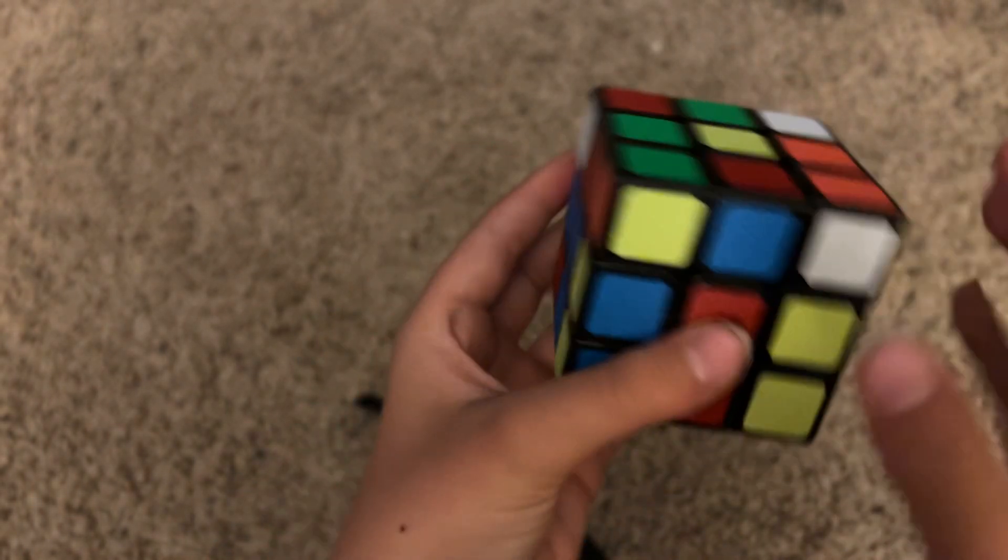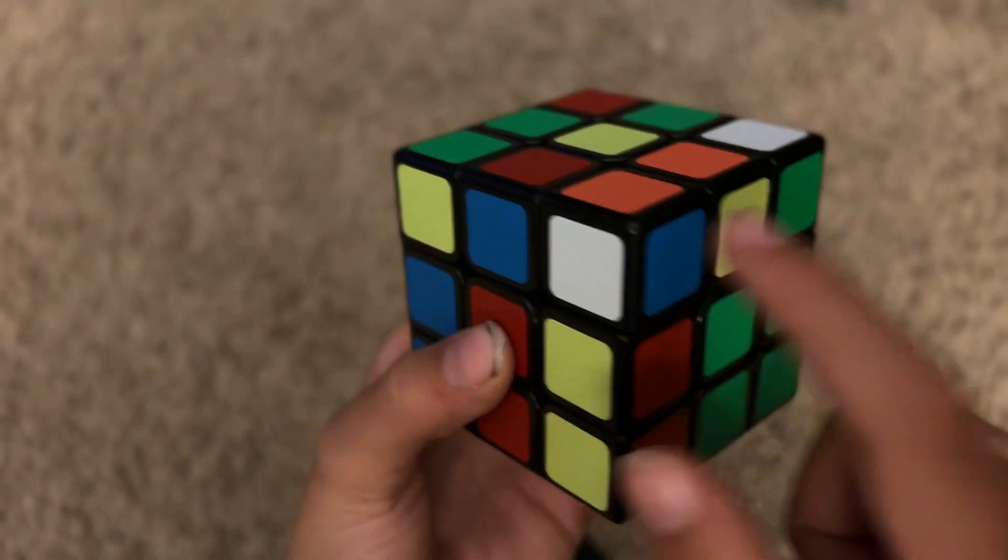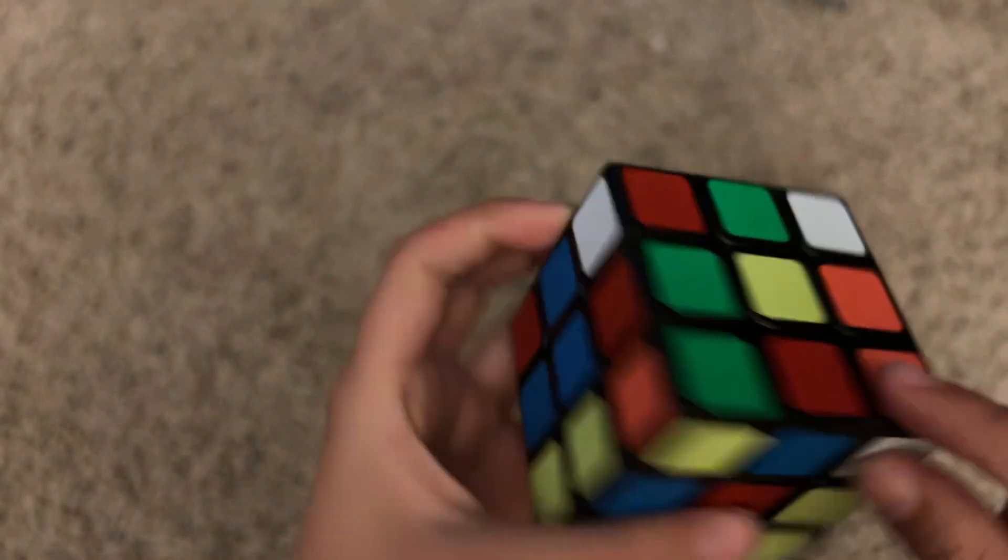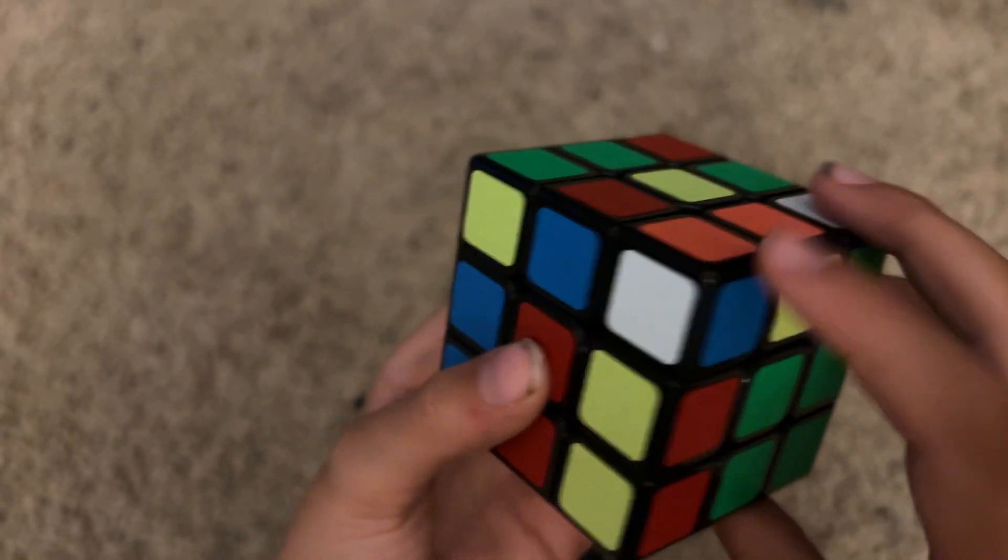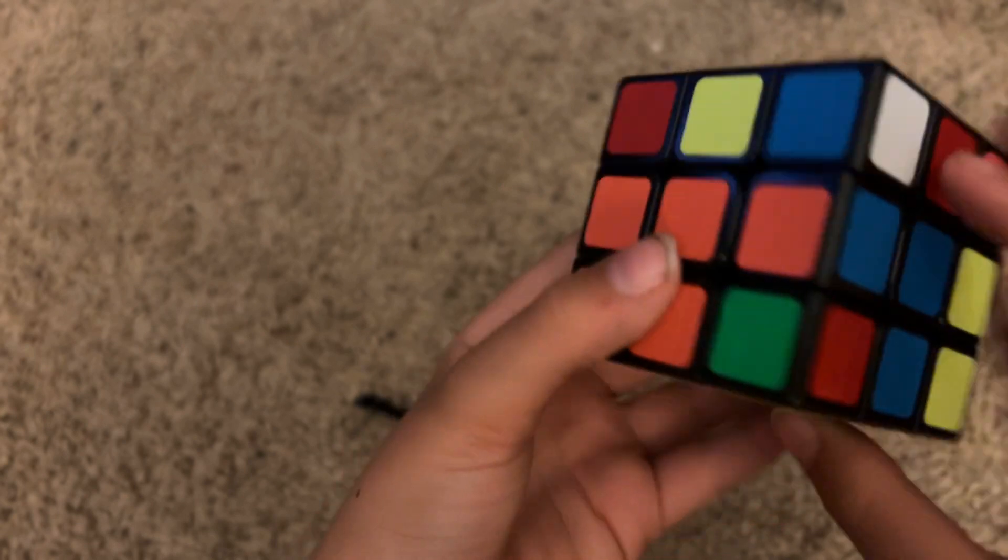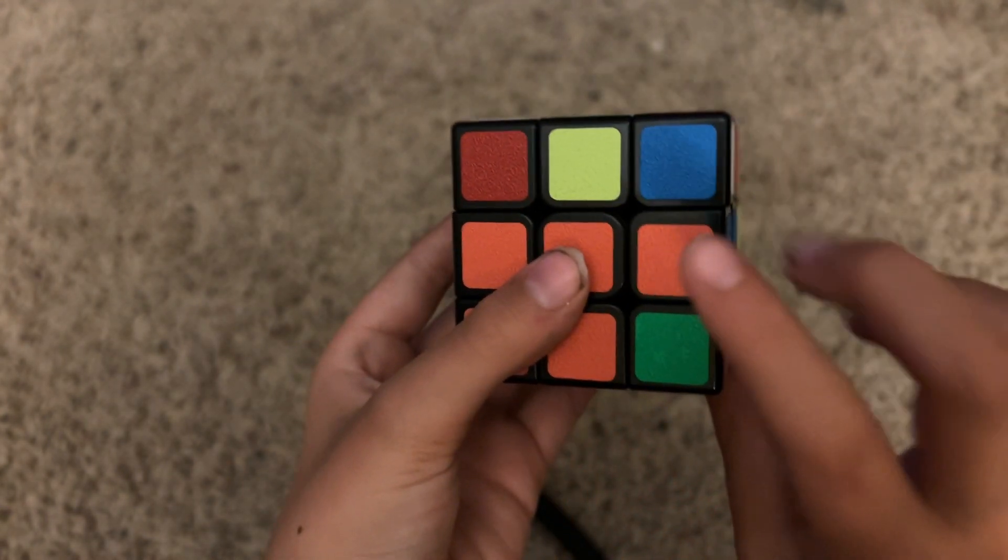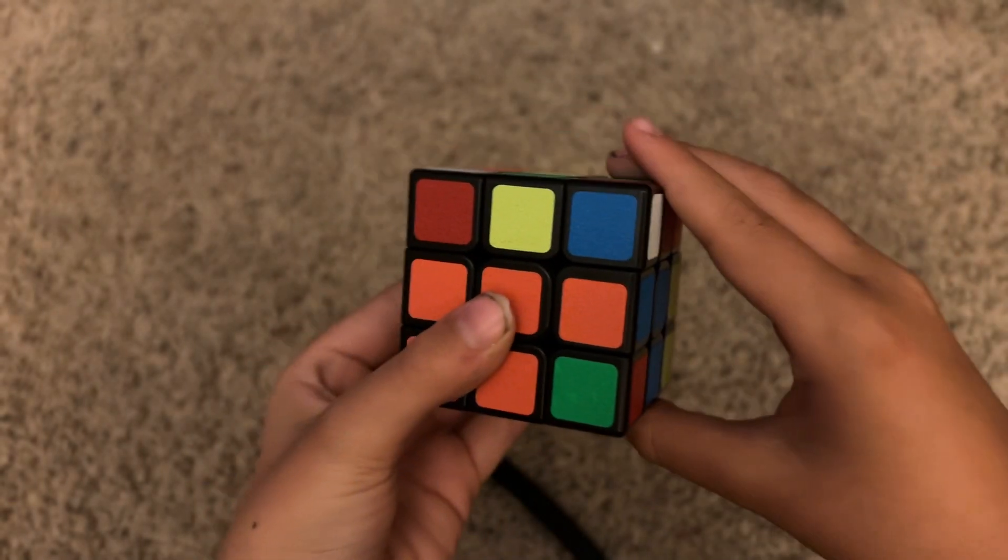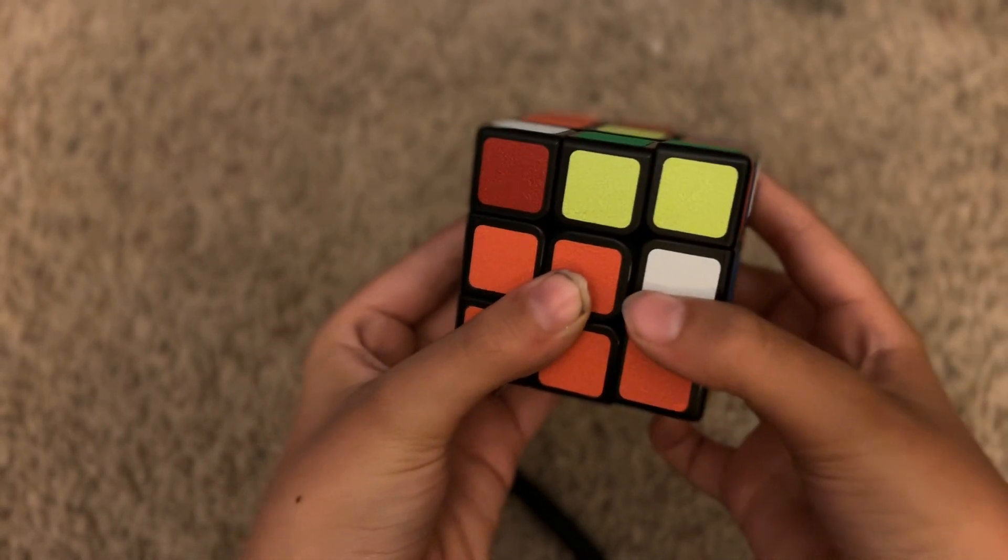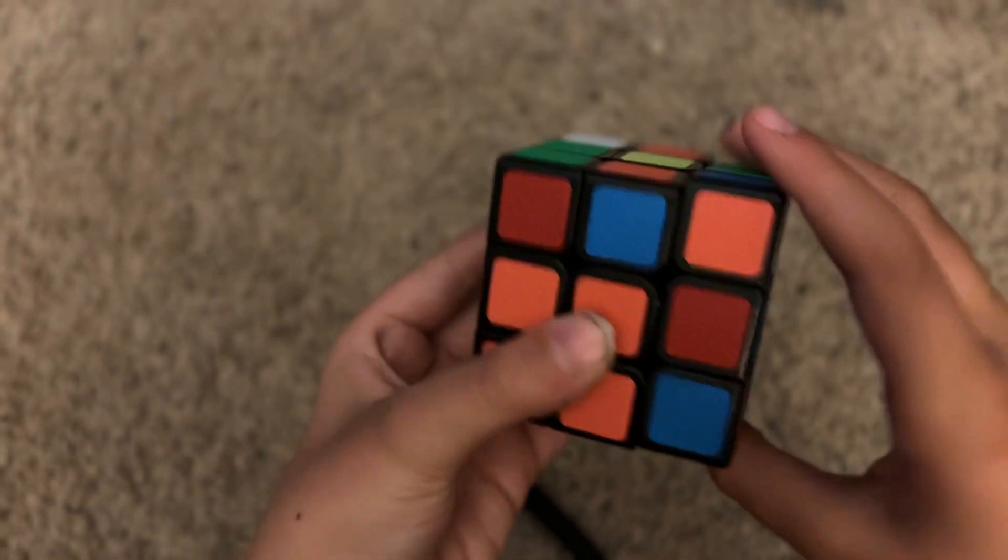Next we can do the blue, white, orange. But the problem is there is no blue, orange edge out. So what we want to do is we want to find the blue and orange edge, which is right here. So we're going to move up, move this to the left, and then move this down. And now it's out.